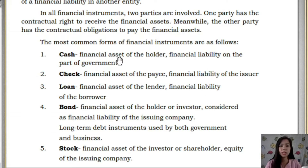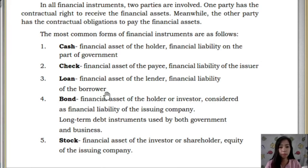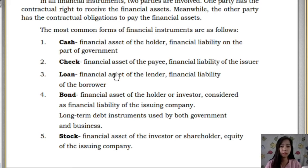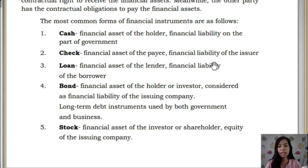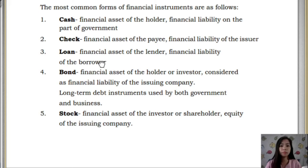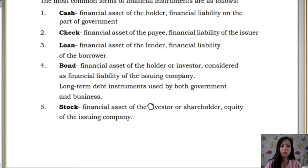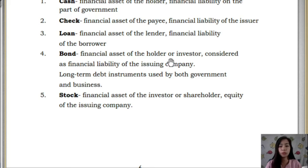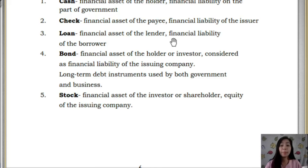We have cash — a financial asset we hold and a financial liability printed by the government. Then we have checks — a financial asset of the payee and a financial liability to the issuer. We also have loans — a financial asset of the lender and a financial liability of the borrower. Then there are bonds — a financial asset of the holder or investor, and considered a financial liability of the issuing company. Companies issue bonds to generate capital; they are long-term instruments used by both government and business.